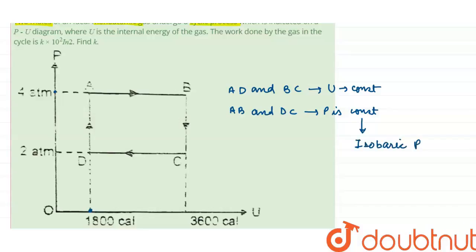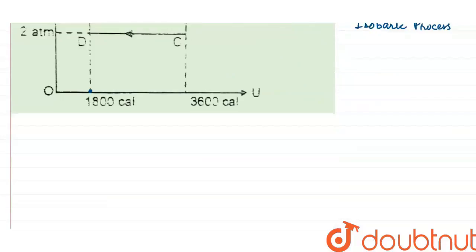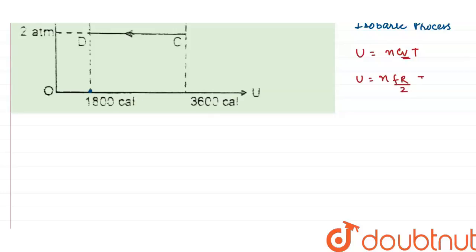We know that internal energy is given by the formula U = nCvT, where Cv is the molar heat capacity at constant volume. The value of Cv is f·R/2, where f is the degree of freedom. Since the gas is monatomic, the degree of freedom is 3, because a monatomic gas only has translational degrees of freedom — not rotational or vibrational.